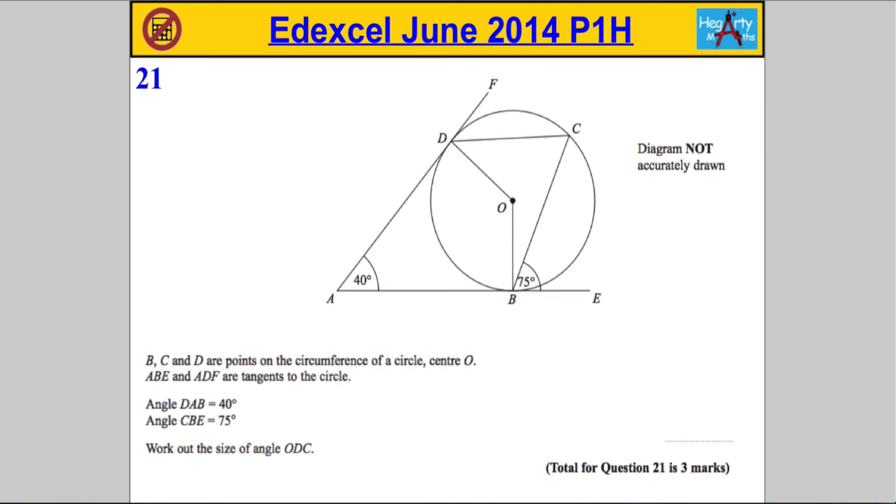Question 21 is a typical circle theorems question. We're told that B, C, and D are points on the circumference of a circle as shown, and ABE and ADF are tangents to the circle. This information is really important for getting at least one mark here. DAB is 40°, CBE is 75°. Work out the angle ODC.